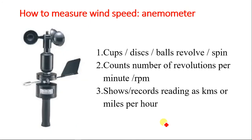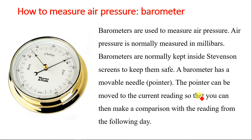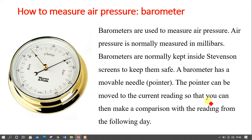Wind speed is measured using an instrument called an anemometer. It has cups that revolve and spin as the wind blows. You count the number of revolutions per minute and record the readings in kilometres per hour or miles per hour, then convert to get your final value.